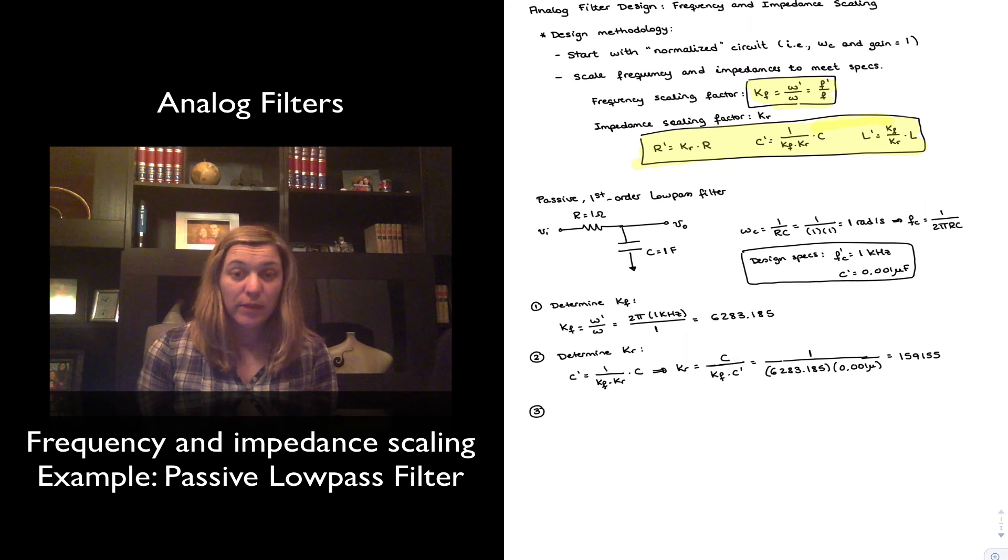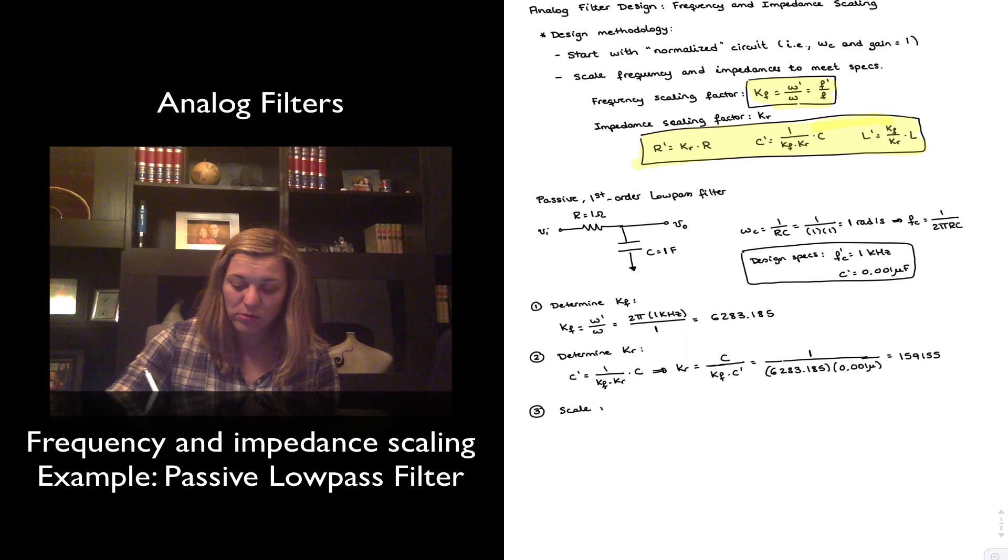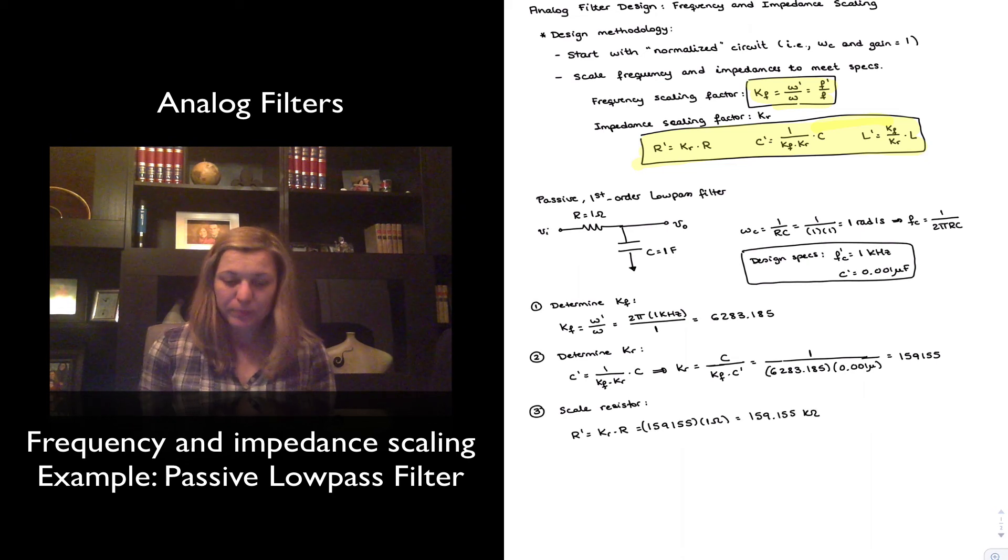Step number three. Now that I know my impedance scaling factor, I can scale my other components. In this case, it's just the resistor. R prime is going to be equal to k r times r. And so it's going to be equal to 159,155 times 1 ohm. Or 159.155 kilo ohms. And that's it.